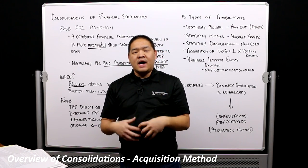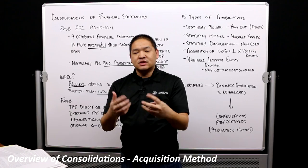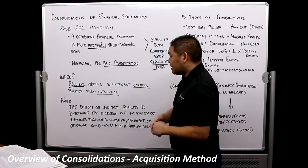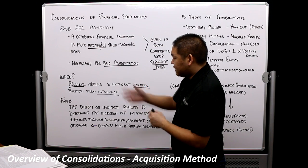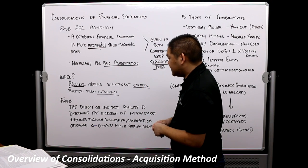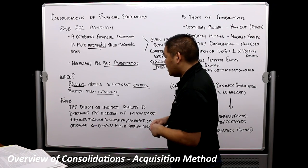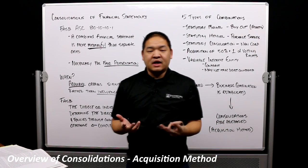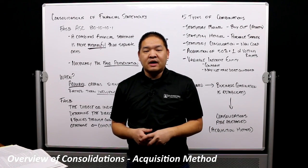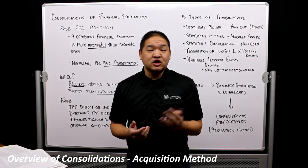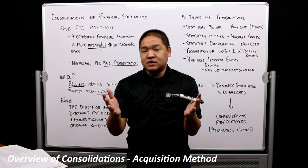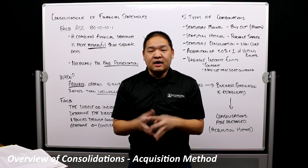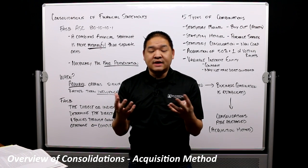Why do we do this, when do we do this? We do this because the acquirer — the investor — obtains significant control rather than influence. In previous lessons, we talked about the equity method of accounting, and we use equity method accounting when an organization invests about 20 to about 50% in another corporation, and in return they get 20 to 50% of the voting rights.